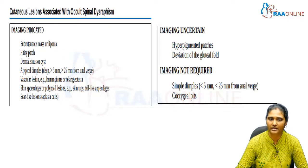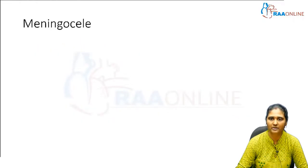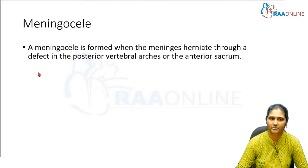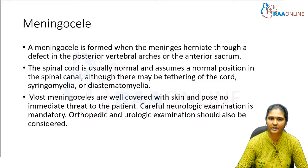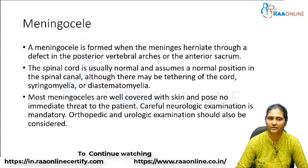Next is meningocele. Meningocele is formed when the meninges herniate through a defect in the posterior vertebral arches or the anterior sacrum. The spinal cord is usually normal and assumes its normal position in the spinal canal, though there may sometimes be tethering of the cord, syringomyelia, or diastematomyelia. Most meningoceles are well covered with skin and pose no immediate threat. Careful neurological, orthopedic, and urological evaluations are required, mainly to rule out neurogenic bladder, as patients are at risk for renal deterioration.